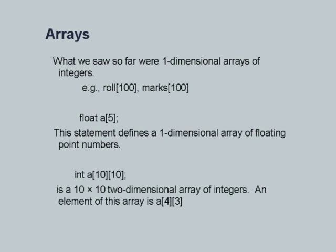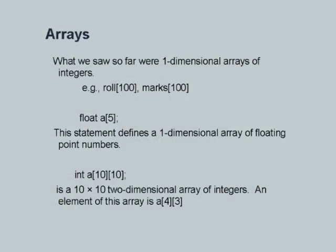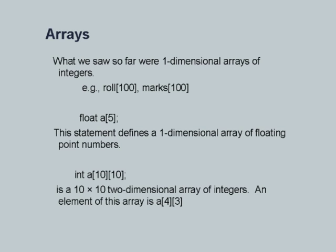An element in the array is referenced by writing the name of the array, followed by an index for the first dimension and an index for the second dimension. So A[4][3] — please remember that array indices move from 0 to max minus 1. If there are 100 elements, the last element is 99 and the first is 0. Consequently, a reference to an index of 4 will actually mean the fifth row, and 3 will mean the fourth column.